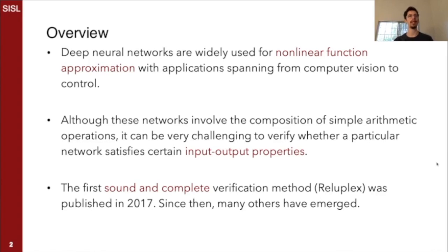Neural networks are general function approximators used in a wide variety of applications spanning from computer vision to robotic control, particularly in domains that are traditionally difficult for computers. Although the networks are built up of simple building blocks, because of their complicated structure it can be very difficult to prove certain input-output properties hold on these networks, and we'd like to be able to do this especially as these networks occupy a greater role in critical applications.